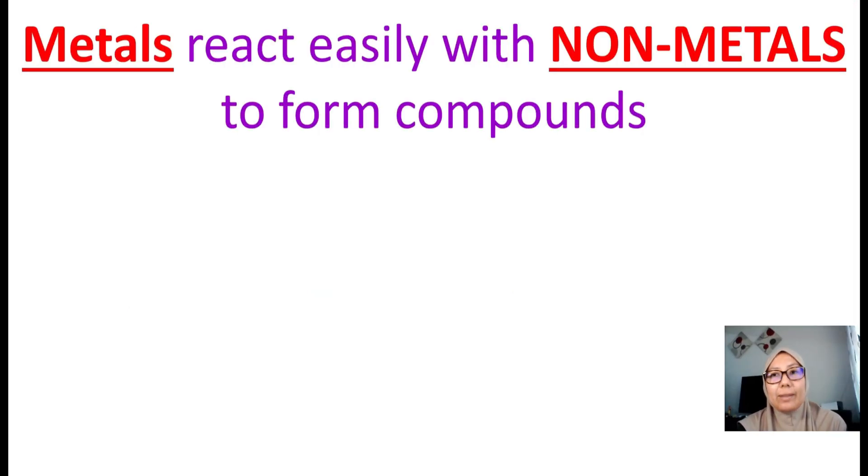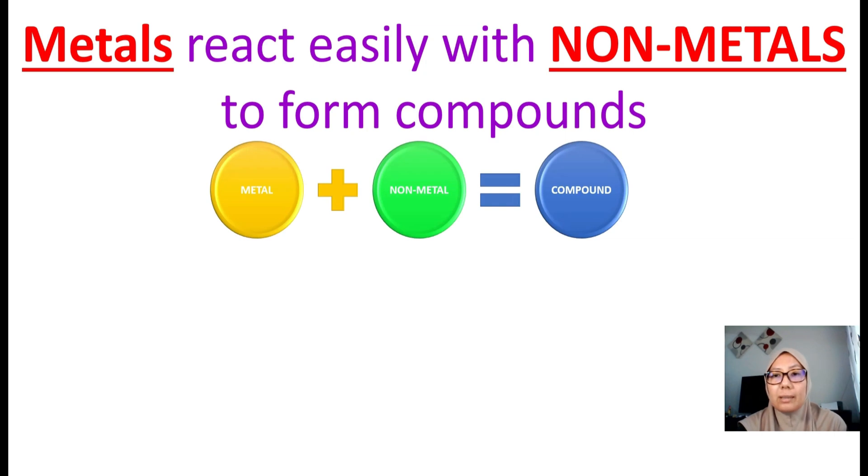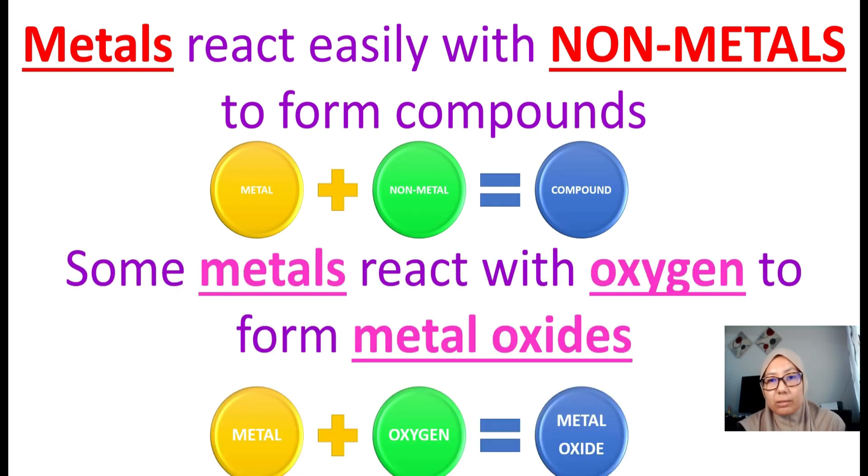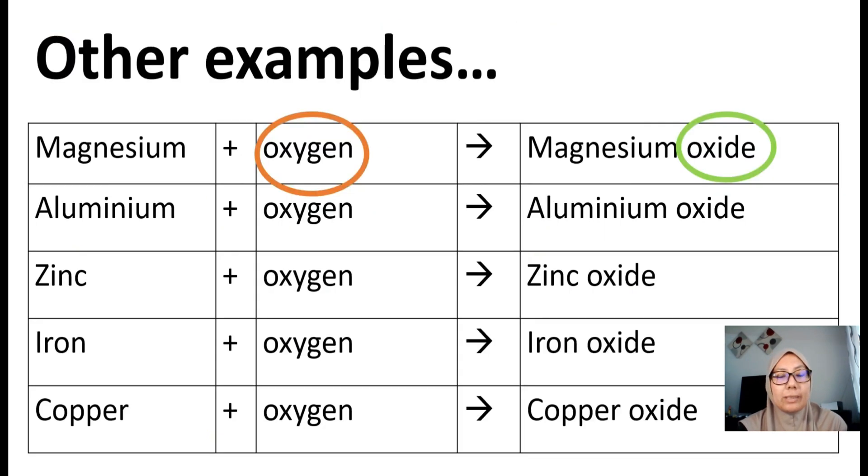Metals react easily with non-metals to form compounds. For example, metals react with oxygen to form metal oxide. Magnesium reacts with oxygen to form iron oxide.